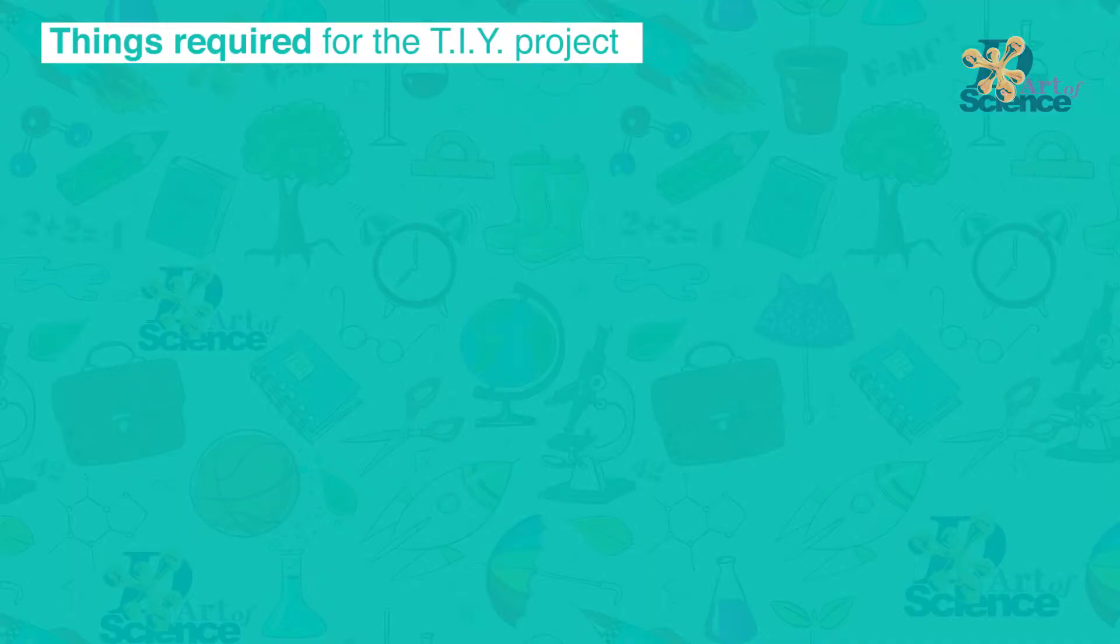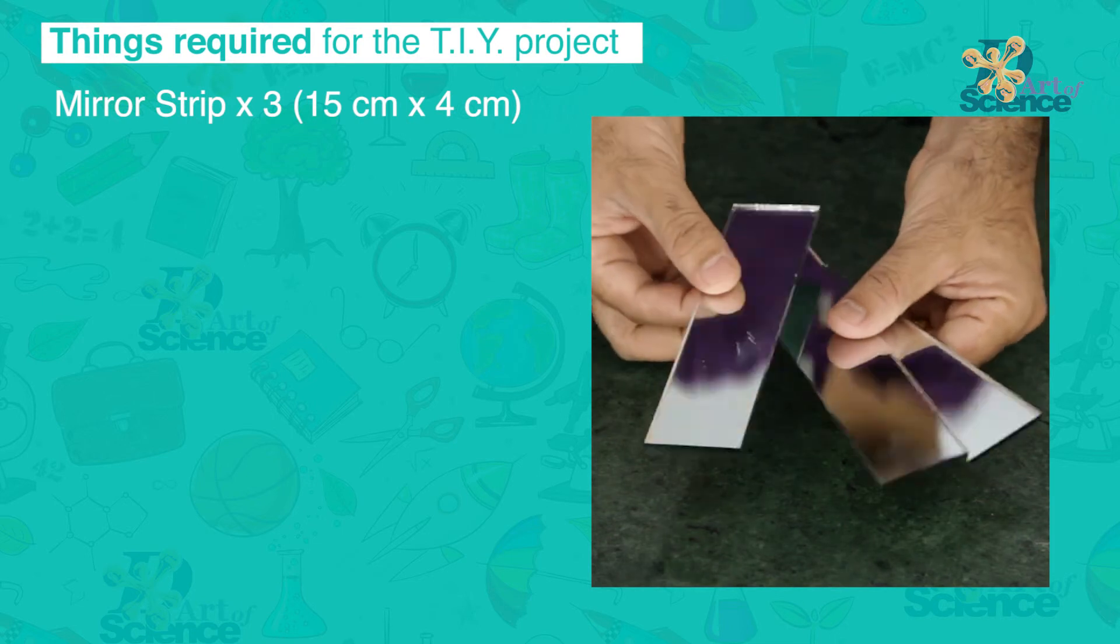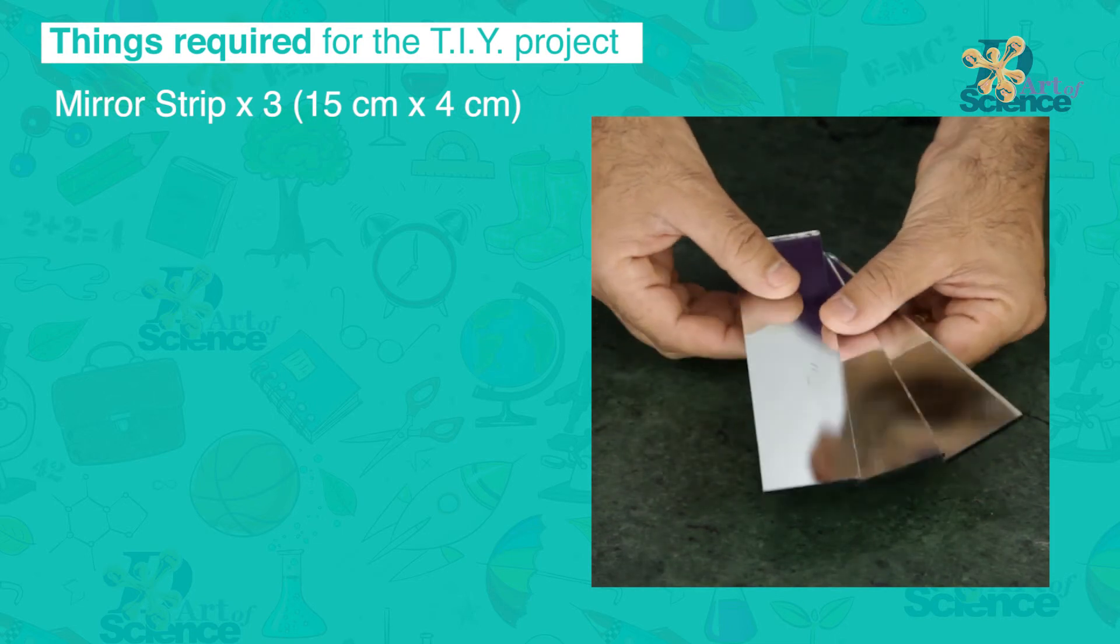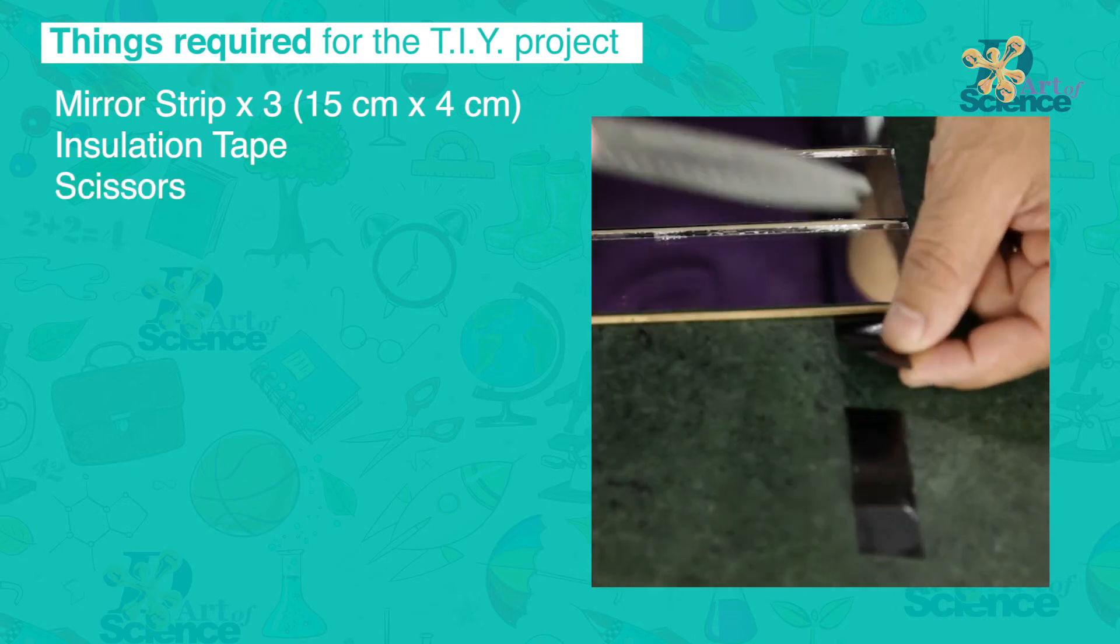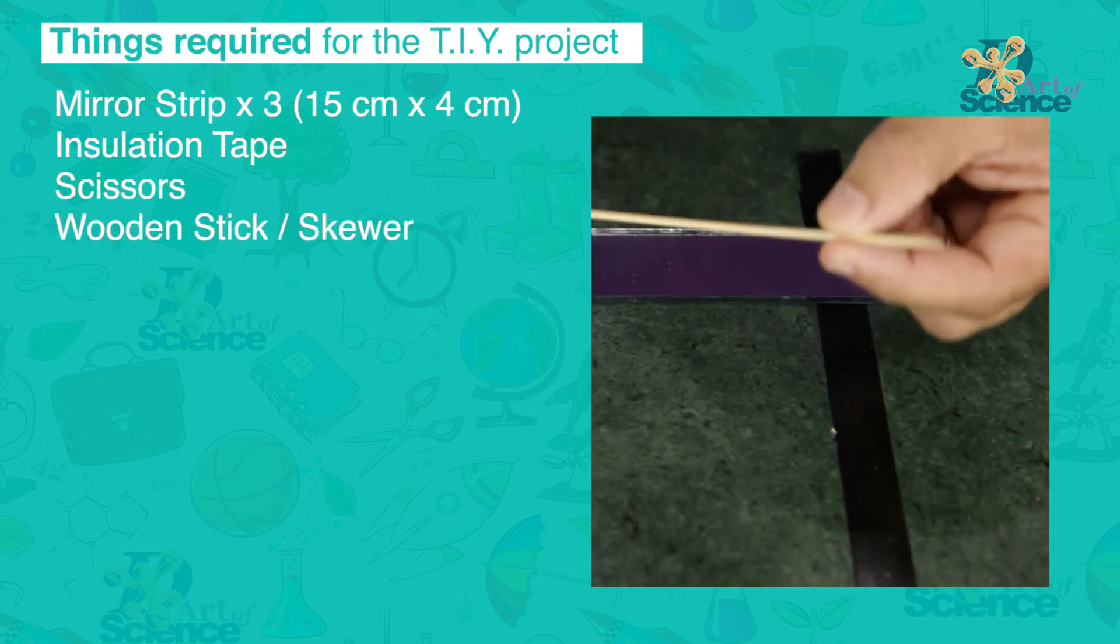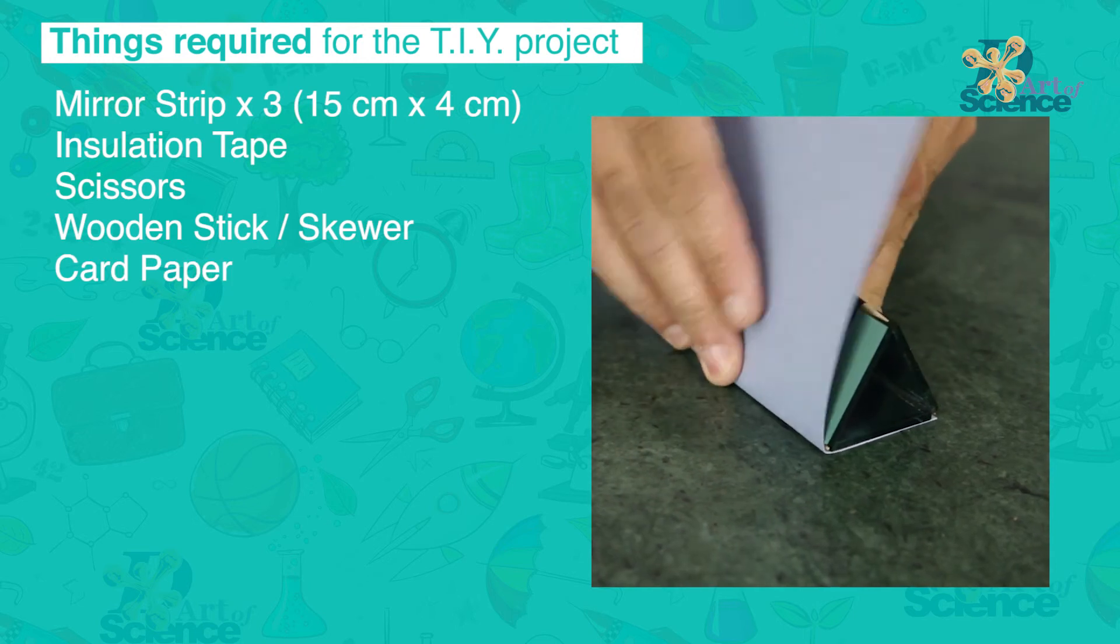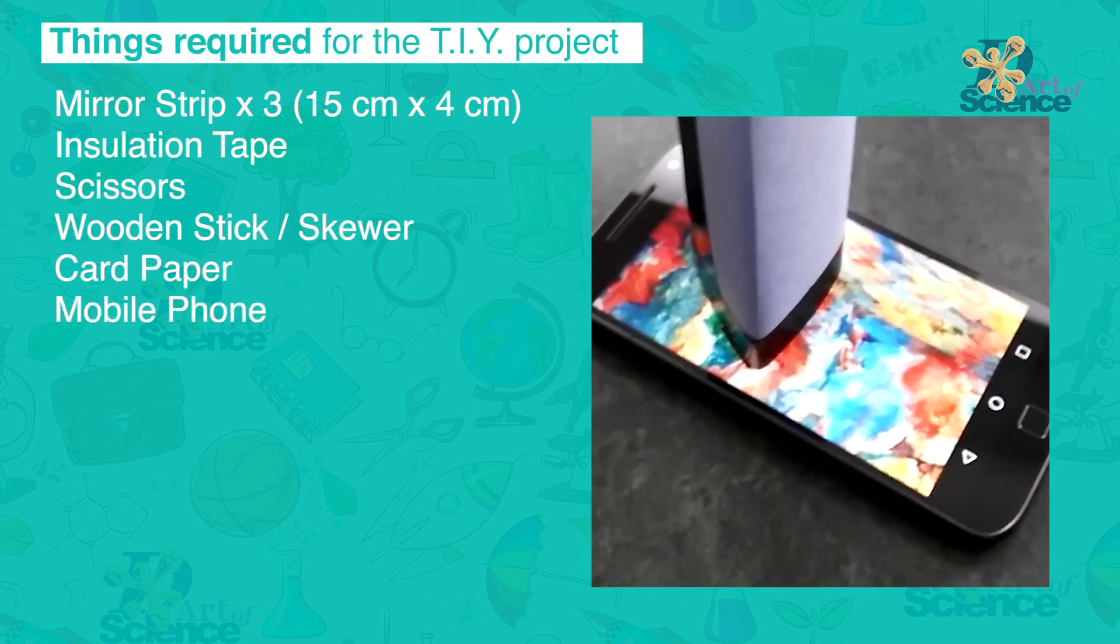Things required for the DIY project. Mirror strips. Three pieces. 15cm x 4cm. Insulation tape. Scissors. Wooden stick or skewers. Card paper. Mobile phone.